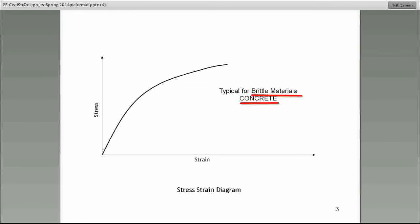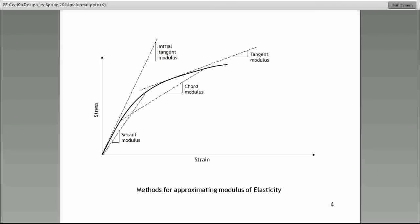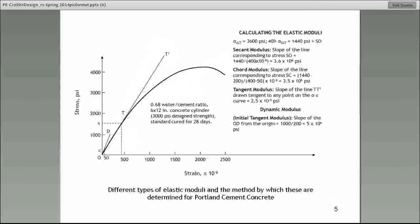However, when we talk about brittle materials, specifically let's talk about concrete, look at the curve. There is no recognizable double kink, so we don't really know exactly where the yield strength is. But something else, there is no segment that is linear in this stress-strain curve. So, how do we calculate the modulus of elasticity? Well, this is slide number four shows some examples of how we go about identifying the modulus of elasticity for a brittle material. There is no one single modulus of elasticity. There are several methods. One is called the initial tangent modulus. The other one is the secant modulus, chord modulus or tangent modulus.